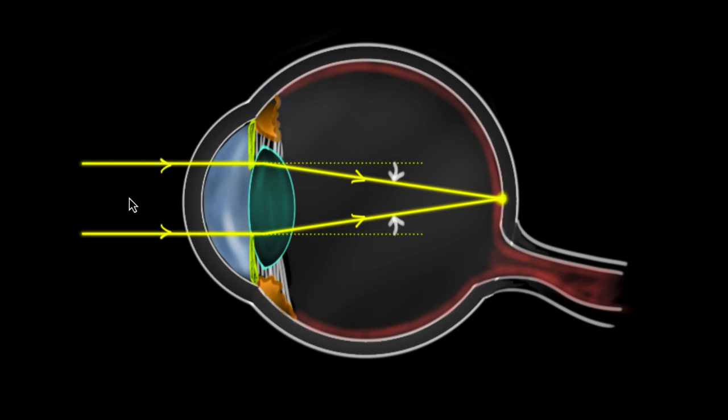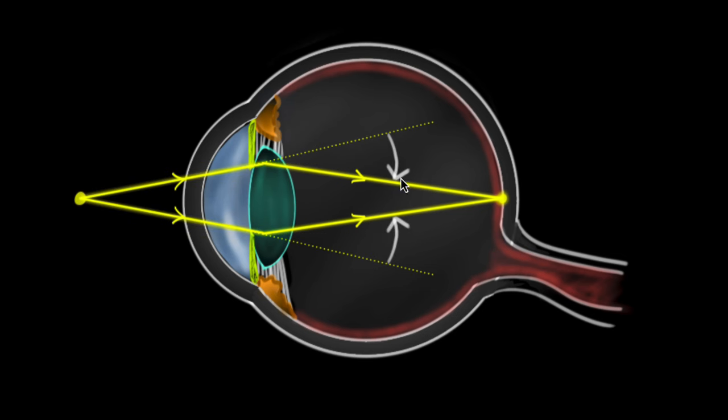Okay, but now imagine the object was closer. If the object is closer, then look, we need more bending power. We need to have more power in this converging system. How do we get that? How do we adjust the power?